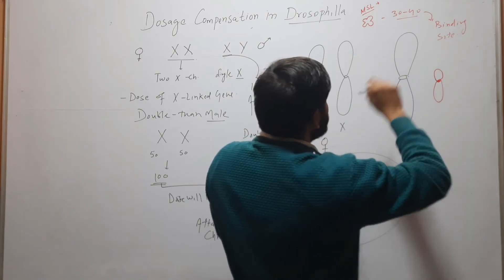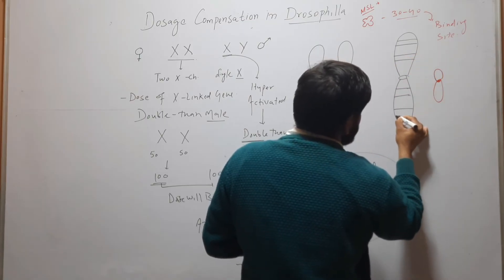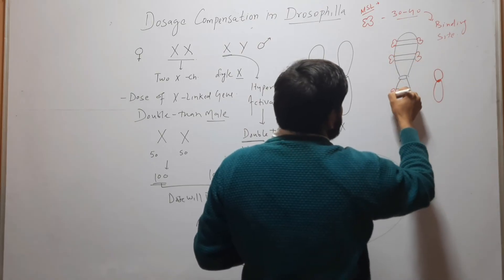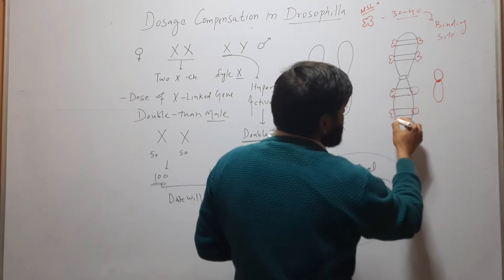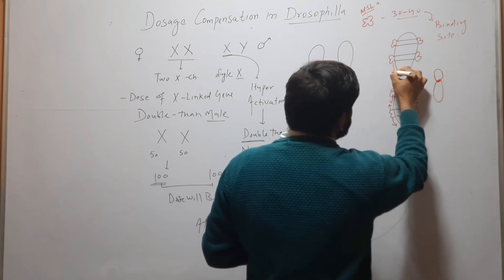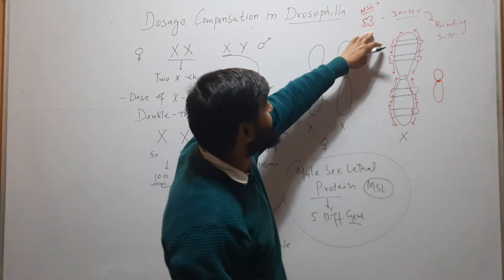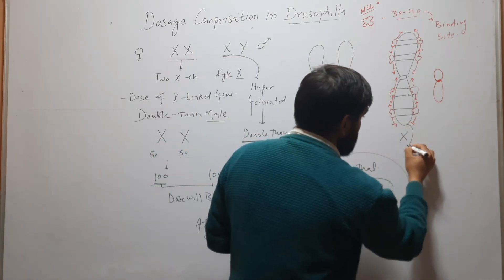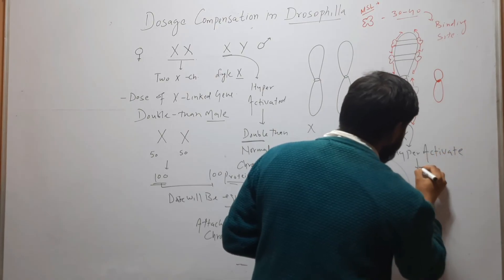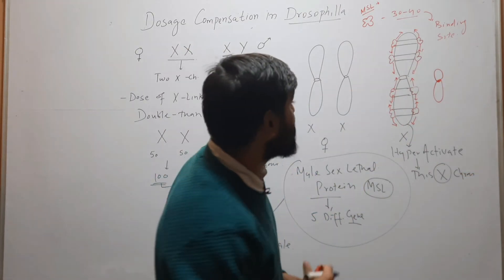The MSL complex has 30 to 40 different binding sites on the X chromosome. Here I am showing four binding sites. MSL will attach to these binding sites and from there it will spread in both directions. After some time it will cover the whole X chromosome, and by covering the whole X chromosome, the MSL will hyperactivate this X chromosome.